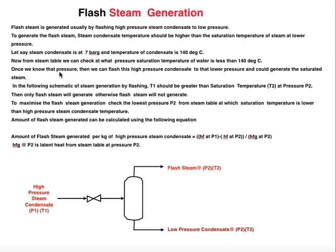Once we know P2, we can flash the high pressure condensate to that lower pressure and generate saturated steam. To maximize flash steam generation, we should check the lowest pressure P2 from the steam table at which the saturation temperature is lower than the high pressure condensate temperature. By choosing a lower P2, the steam is maximally flashed and more flash steam is produced.